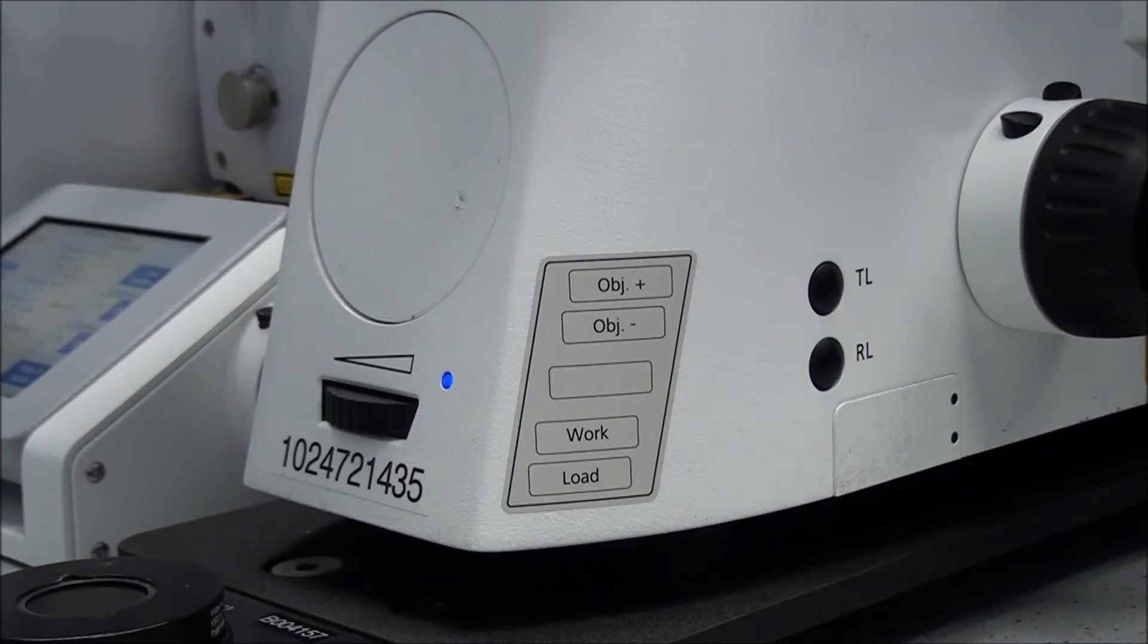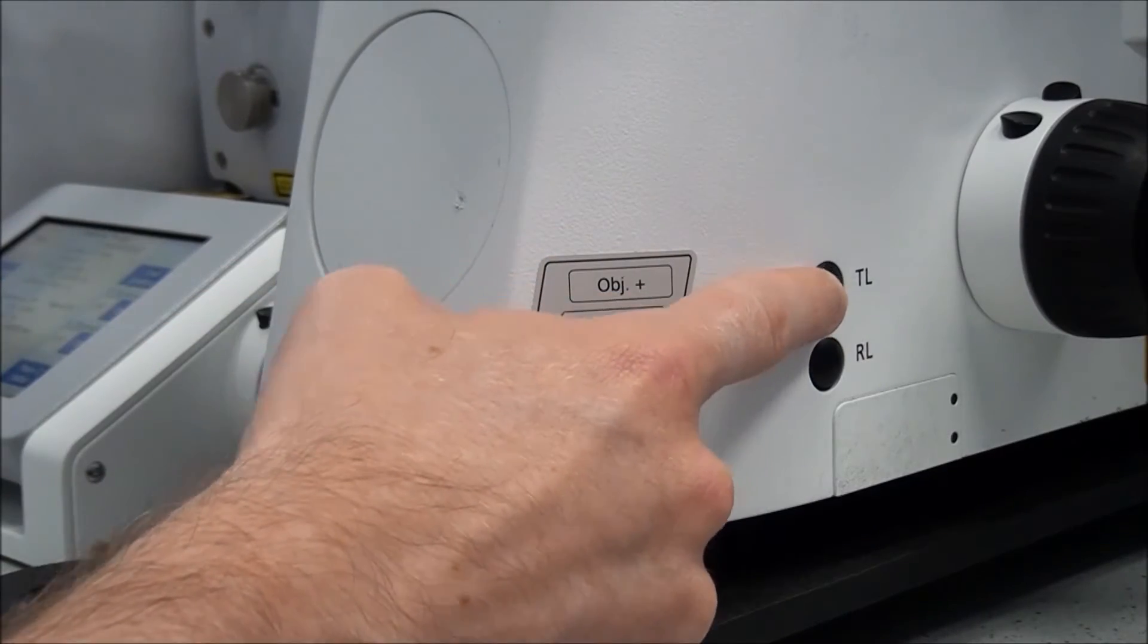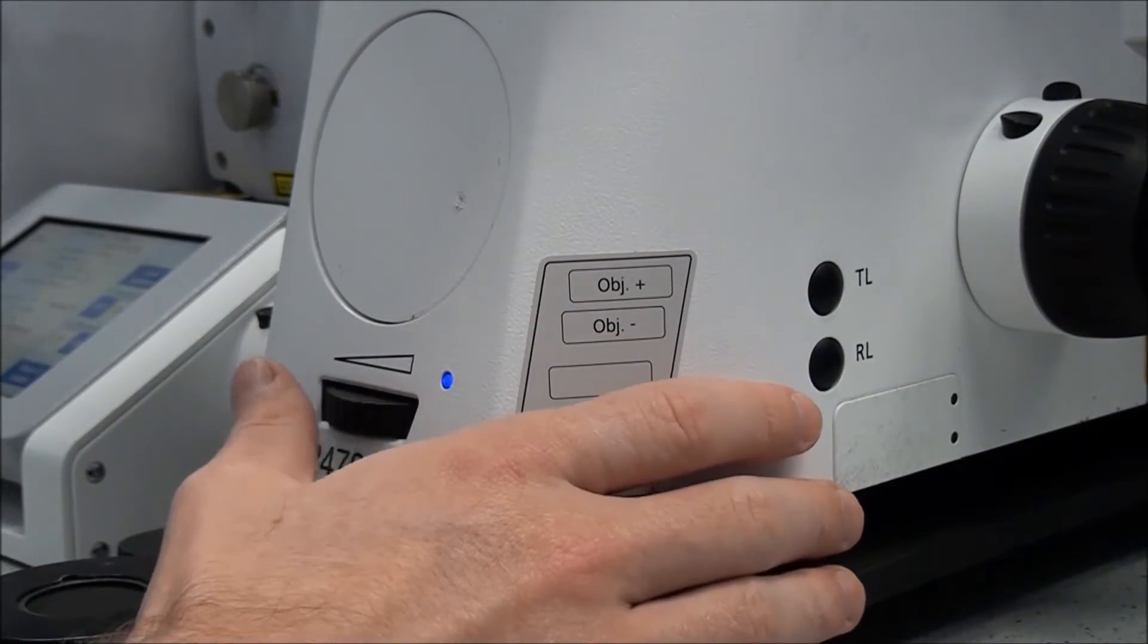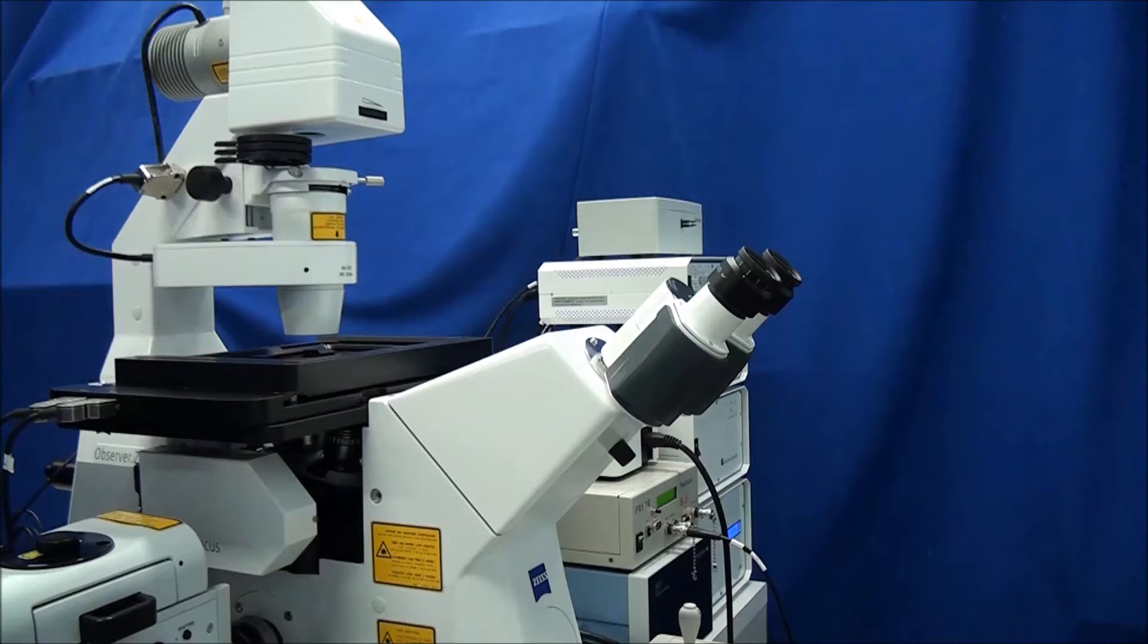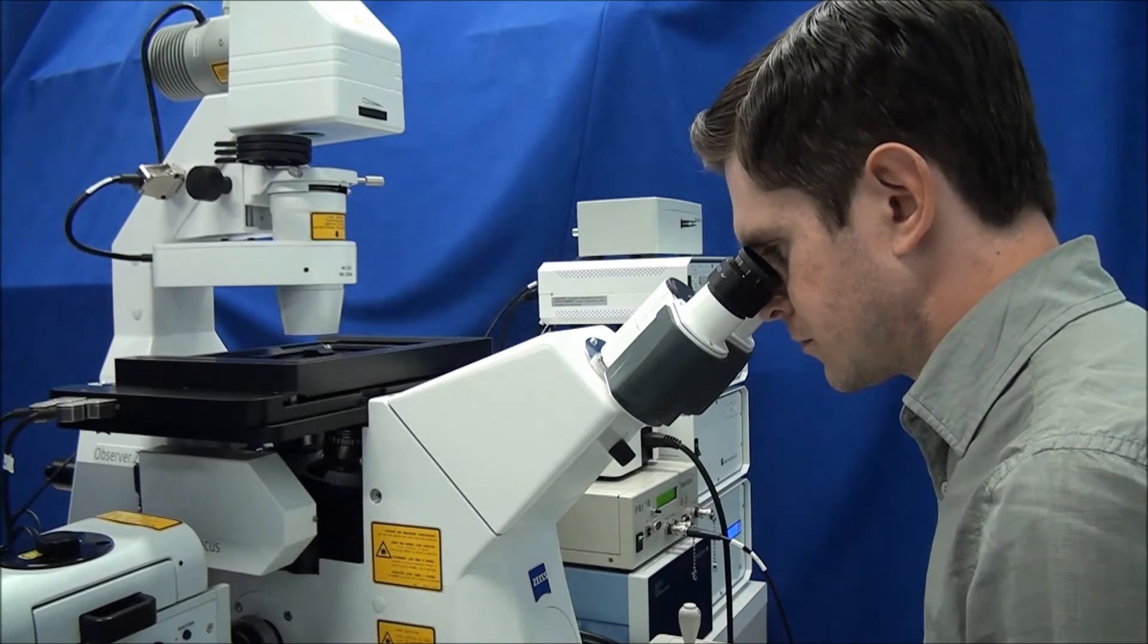If necessary, press the TL button to turn on the light or open the shutter. Turn up the transmitted light via the roll wheel on the front of the stand. You should be able to look comfortably through the eyepieces.